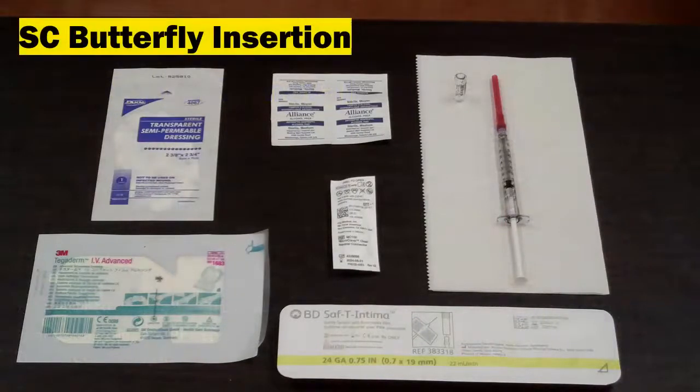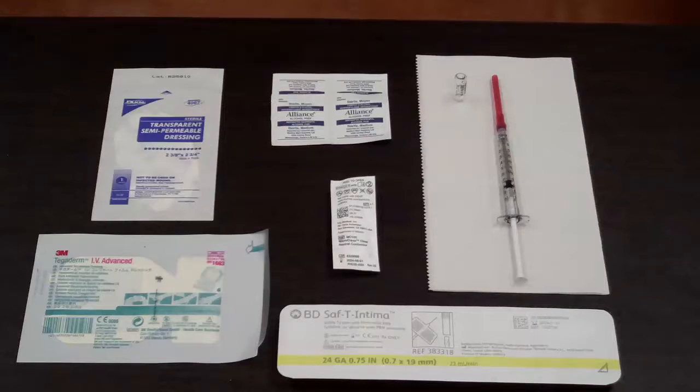First, gather your supplies and ensure you have a clean surface to put them on. You will need a transparent semi-permeable dressing such as Tegaderm, several alcohol wipes, a microclave clear connector, the Safety T Intima subcutaneous butterfly, and your prepared injection plus 0.21 mils for priming the subcutaneous butterfly line.